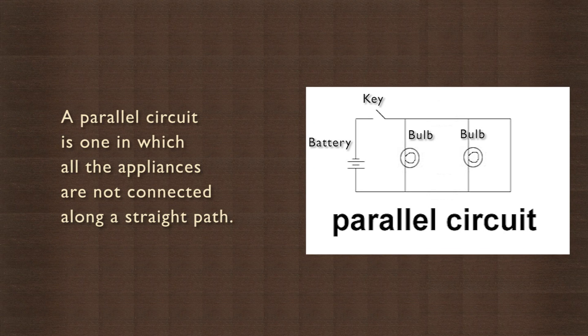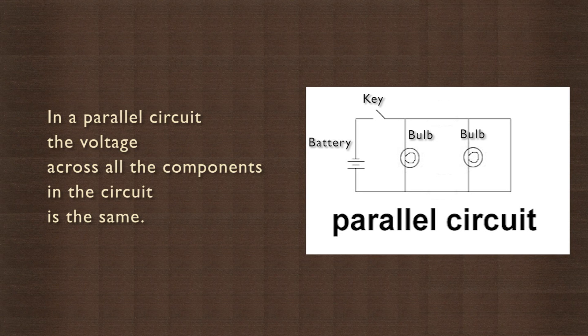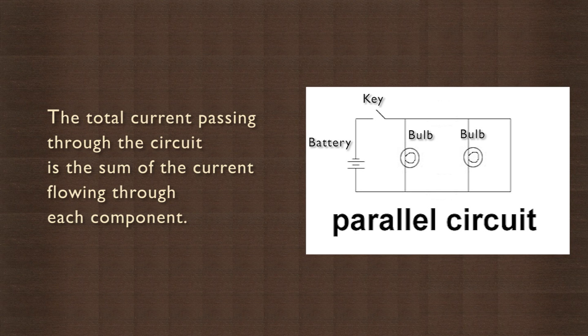A parallel circuit is one in which all the appliances are not connected along a straight path. In a parallel circuit, the voltage across all the components in the circuit is the same. The total current passing through the circuit is the sum of the current flowing through each component.